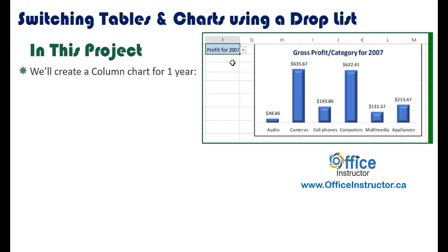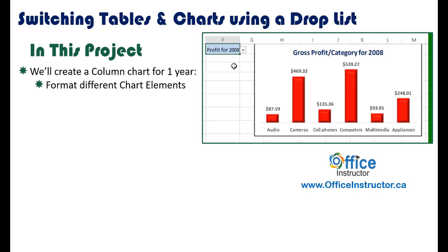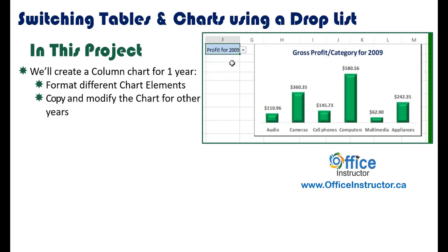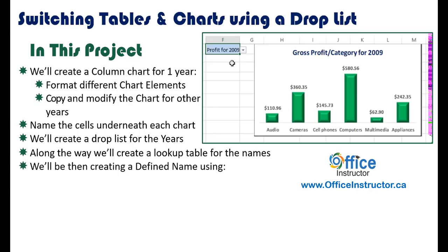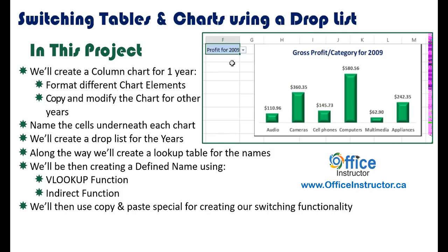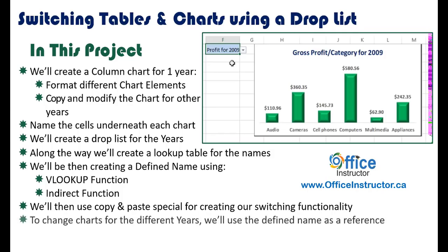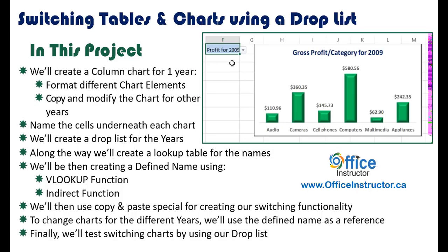In this project, we'll create a column chart for one year, format the different chart elements, and copy and modify the chart for other years. We'll name the cells underneath each chart and create a drop list for the different years. Along the way, we'll create a lookup table for the names, then create a defined name using the VLOOKUP function and INDIRECT function. We'll use copy and paste special for creating our switching functionality to dynamically change charts for the different years, using the defined name as a reference. Finally, we'll test switching charts by using our drop list.